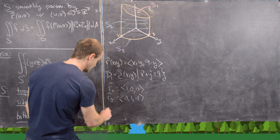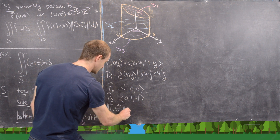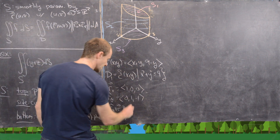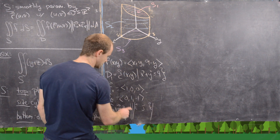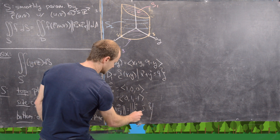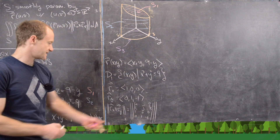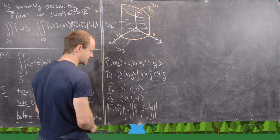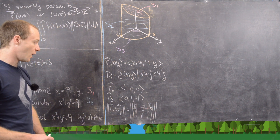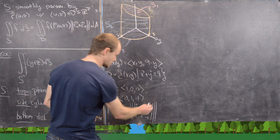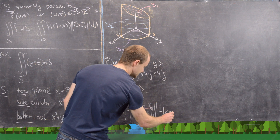We calculate the magnitude of R_x × R_y. Setting up the cross product with the i, j, k determinant: rows (1, 0, 0) and (0, 1, −1), we get 0 in the i-direction, 1 in the j-direction, and 1 in the k-direction. So the cross product is (0, 1, 1), and its magnitude is √2.